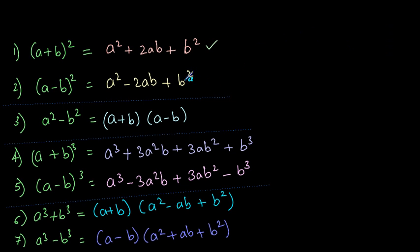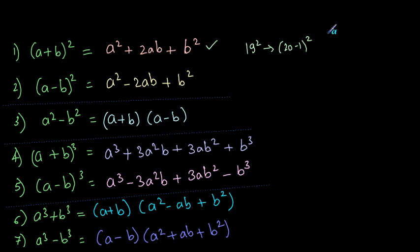The second formula is (a − b) whole square, which gives us a square minus 2ab plus b square. Consider a situation where you have to calculate 19 squared. You can break down 19 into (20 − 1) whole square, put it into this formula, and solve for (20 − 1)², which gives you 19 squared. It's much easier to add or subtract than to multiply.